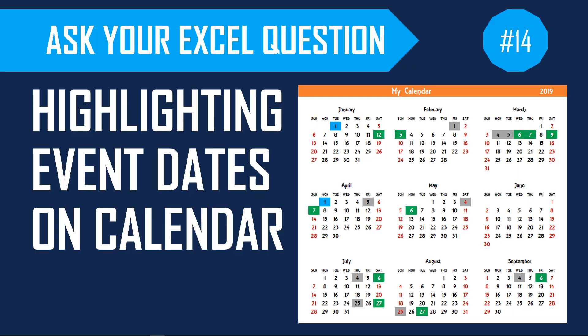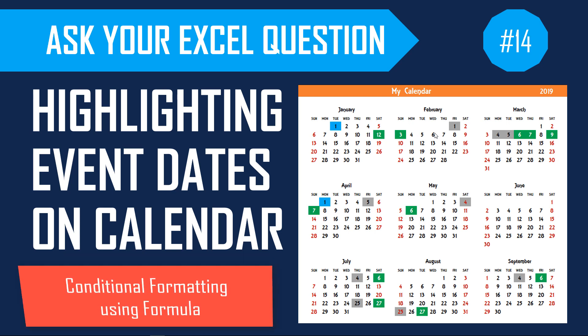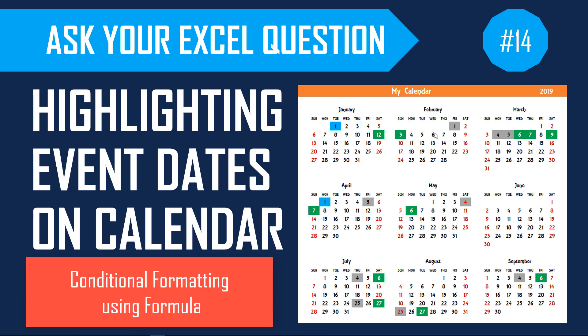Welcome to this week's episode of Ask Your Excel Question. In the previous video, we learned how to build an annual calendar in Excel. In this video, we're going to follow up with the same calendar and learn how to highlight specific dates — whether holidays, weekends, or other event types — and color them differently using conditional formatting formulas. Let's get started.